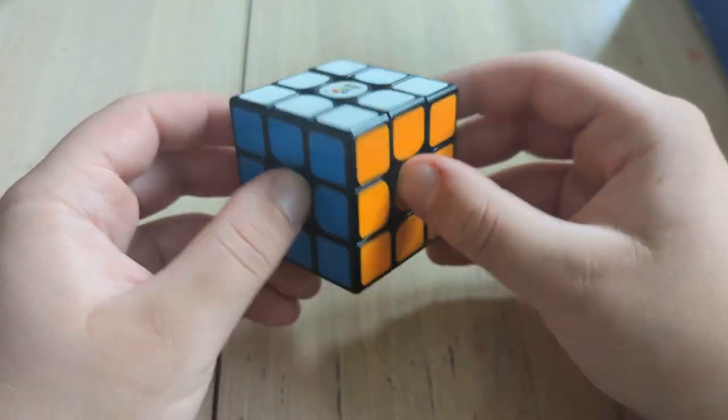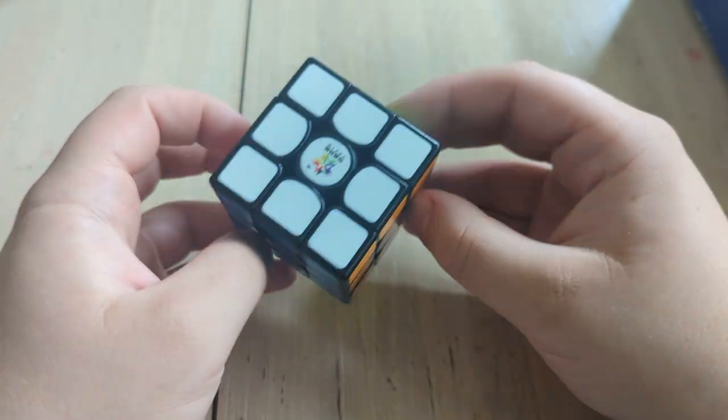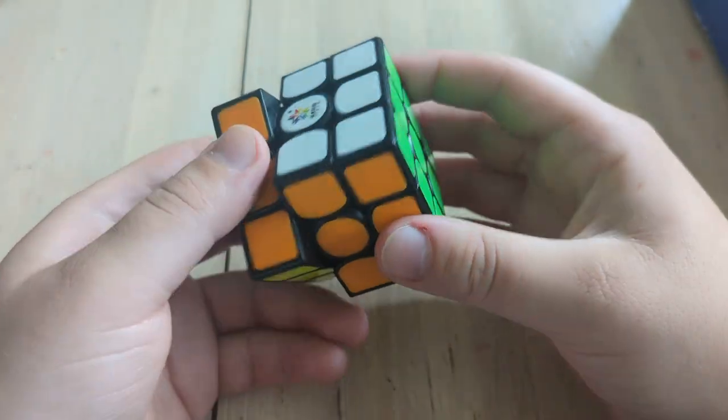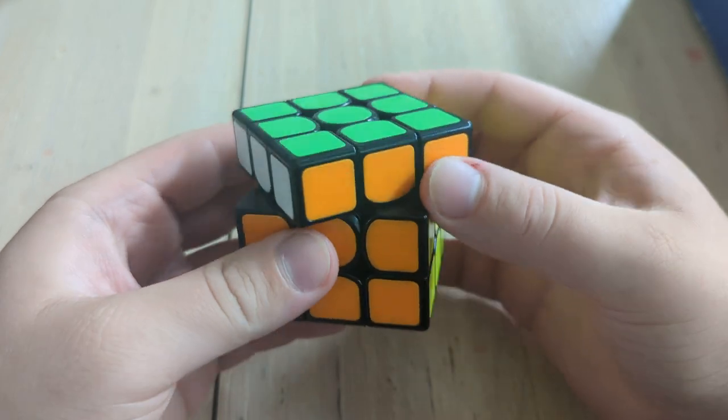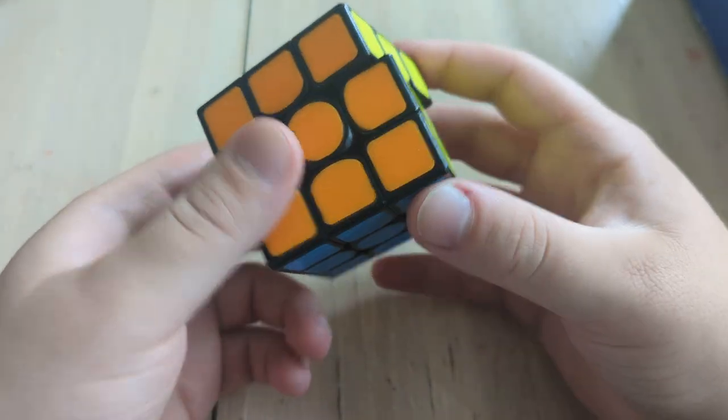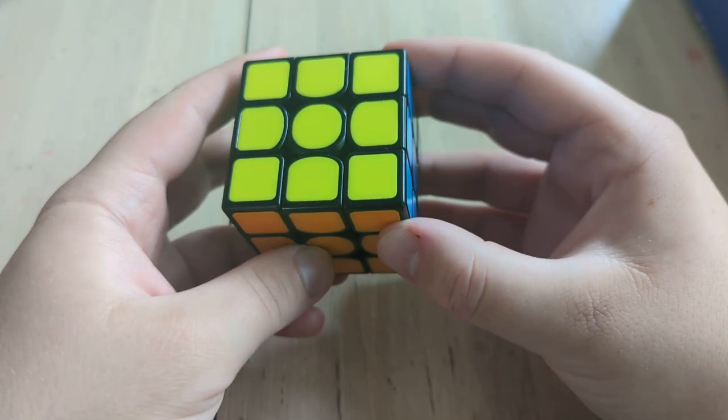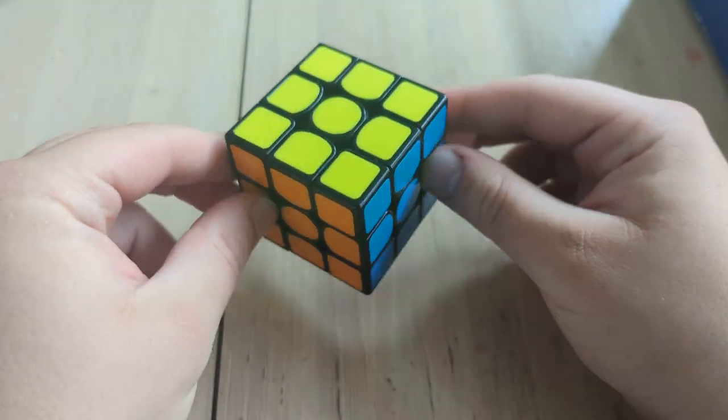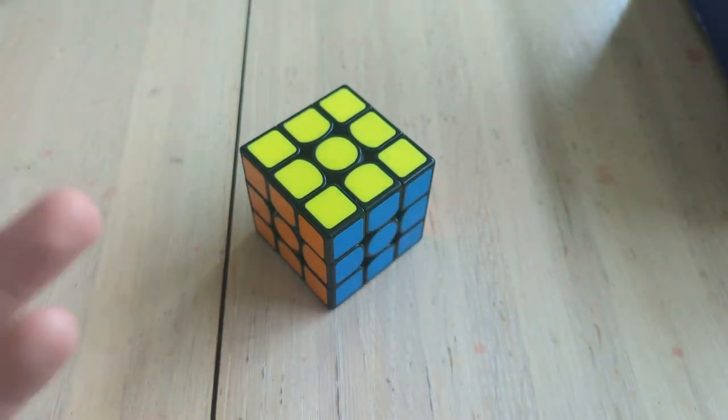That algorithm's not valid for cuboids, but this isn't actually a cuboid, this is a 3x3x3, so that's fine. And that is how I solve a 3x3 with domino reduction. Thanks for watching, and goodbye.